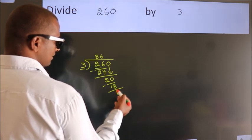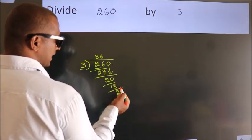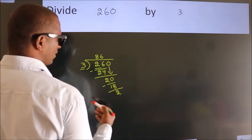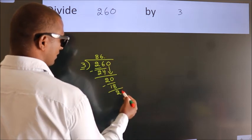After this, no more numbers to bring down. So what we do is, we put a dot and take 0.